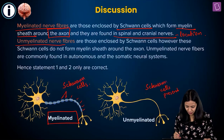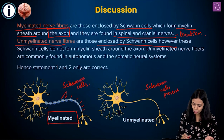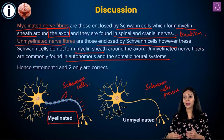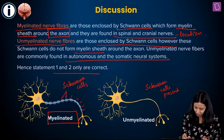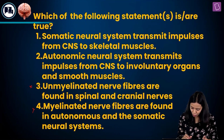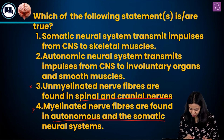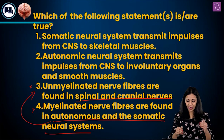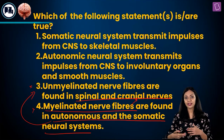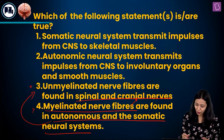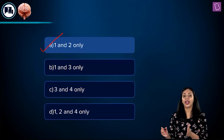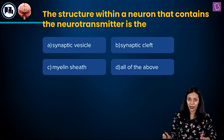Unmyelinated nerve fibers, though enclosed by Schwann cells, are found in the autonomic and somatic neural systems. This makes statements 3 and 4 incorrect — their locations are interchanged in those statements. The correct answer to this question is option A: statements 1 and 2 are correct.